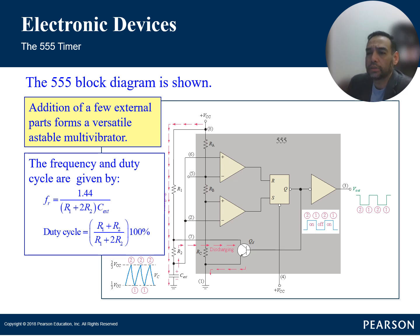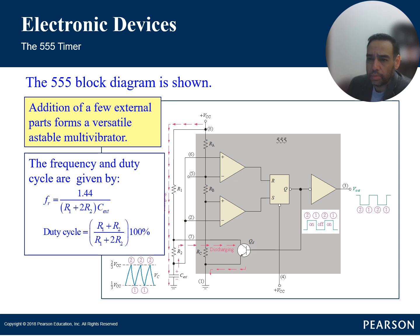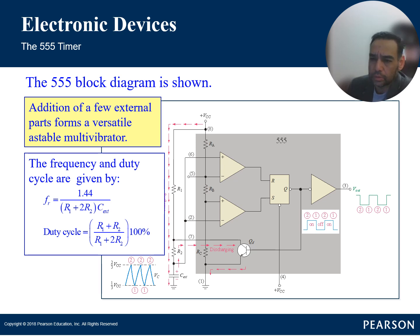Applications for the 555 timer include timers, pulse generators, oscillators, LED flashers, tone generators, voltage-controlled oscillators, and motor control circuits. Once you get into embedded microcontroller classes you'll use the 555 timer to control motors. The frequency and duty cycle are calculated from the formulas provided using the external resistor and capacitor values.